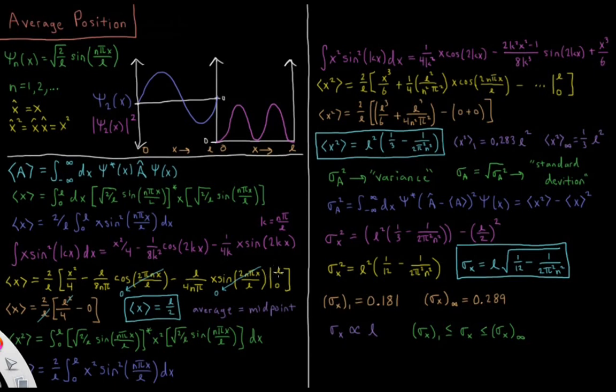The only thing that actually contributes is our x squared over 4. That's l squared over 4 at l and 0 at 0. That cancels with the 2 over l out in front there, leaving us with no l on the denominator and an l on the numerator. 2 over 4 gives us 1 half. The average value for x is the length of the box over 2.